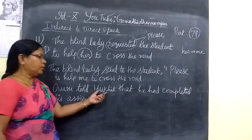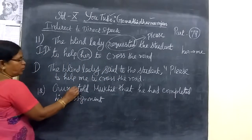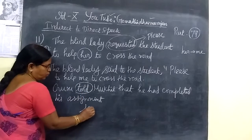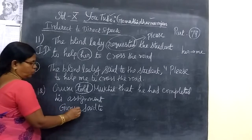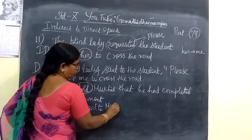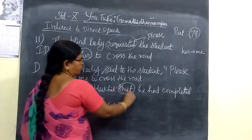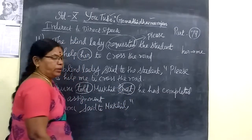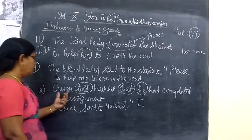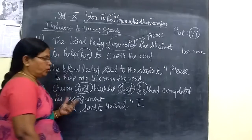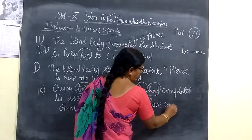And see one more: 'Guru told Mughir that he has completed his assignment.' Here, 'told' — what is 'told' called? It is changed into 'said to'. So: Guru said to Mughir. Then the conjunction 'that' element is removed, and you put inverted comma. 'He' is changing to 'I' — it refers to the speaker, Guru.